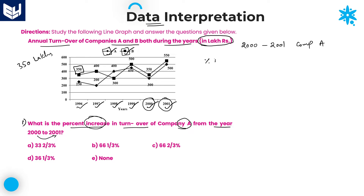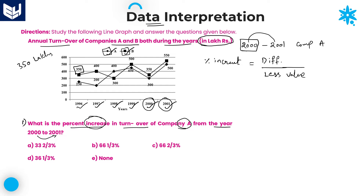Basically, how can we calculate percentage increment? Percentage increment is equal to the difference between the values which we are taking, divided by the less value or previous year value — both are the same. Difference between the values for 2000 and 2001 for company A, divided by the less value among those two, or the previous year value. We are comparing with the previous year, so the denominator is the previous year value, into 100 percentage.